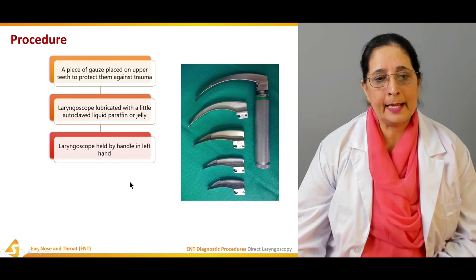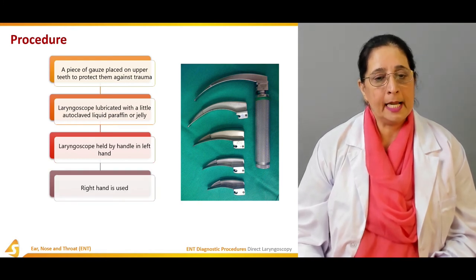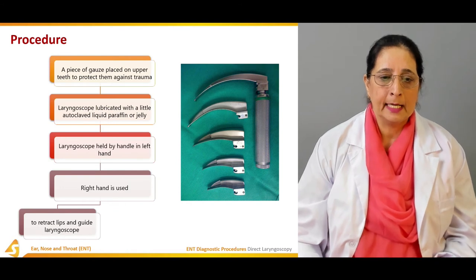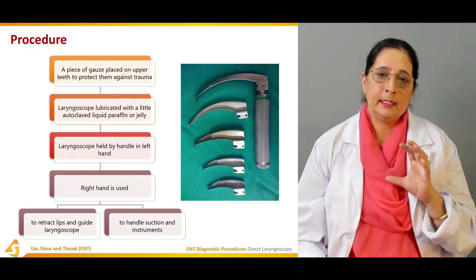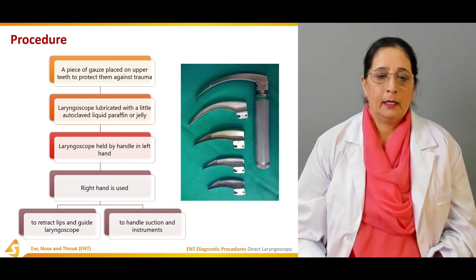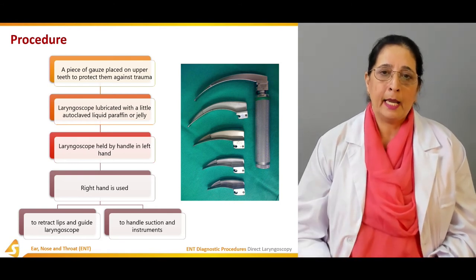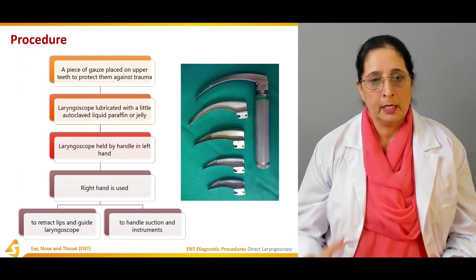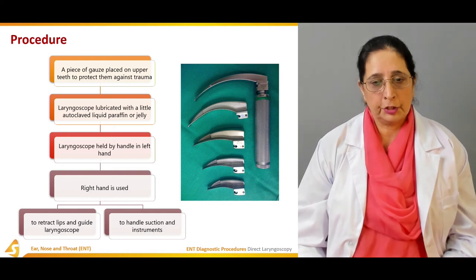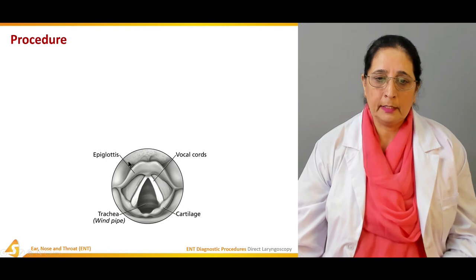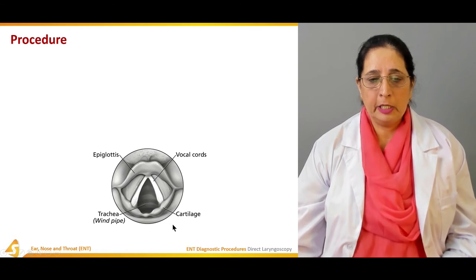The laryngoscope is held by the handle in the left hand. The right hand is used to retract the lips, guide the laryngoscope, handle suction, and hold instruments. So the left hand holds the laryngoscope and the right hand is used for opening or retracting the lips and for suction or holding instruments.